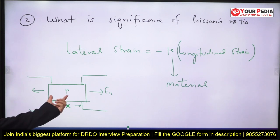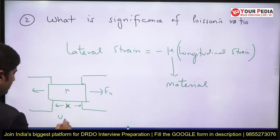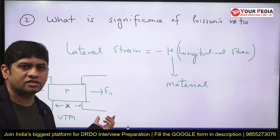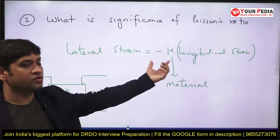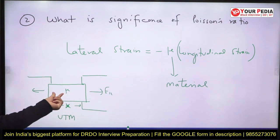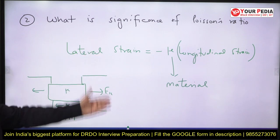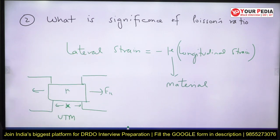The universal testing machine is used to calculate strain and draw the stress-strain diagram. If I apply Fx there will be epsilon x — that is the longitudinal strain. If I know the mu of the material I can calculate the lateral strain. So basically the significance of Poisson's ratio is to calculate the lateral strain.